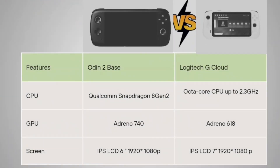Talking about the CPU: in the Auden 2 Base it is Qualcomm Snapdragon 8 Generation 2. In your Logitech G Cloud it is an Octa-Core CPU up to 2.3 GHz. The GPU is Adreno 740 for your Auden 2 Base and for Logitech it is Adreno 618.